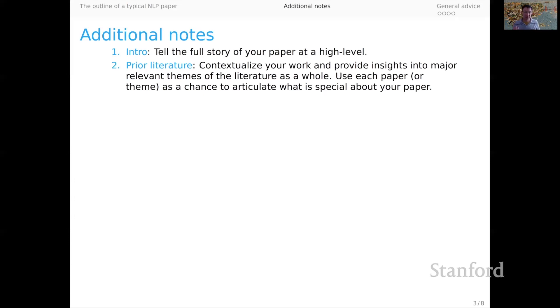In place two is the discussion of background material or related work or prior literature. This is an opportunity for you to contextualize your work and provide insights into the major themes of the literature as a whole. What you should really be thinking about is using each paper or theme that you identify as a chance to contextualize your ideas and especially articulate what's special about the contribution that you're making. This sets the stage for the reader.